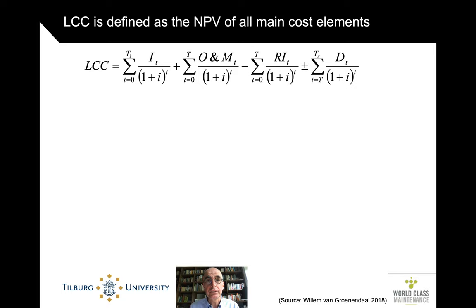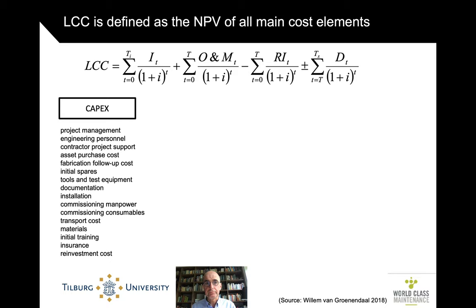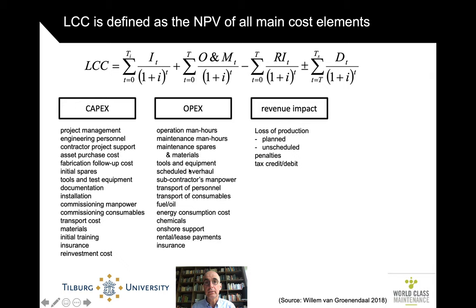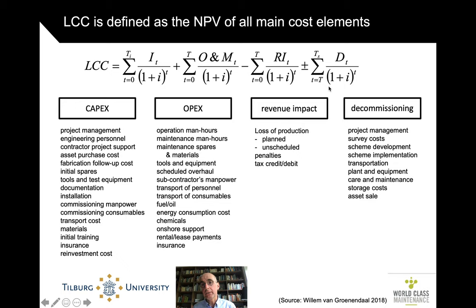If we then look at life cycle costing, that is the net present value of all the main cost elements. There are the capital expenditures: the initial investments in the project, the engineering, the contractor, all the purchasing costs, the installation, the transportation, the initial training. Then there is the OPEX: operation, man-hours, maintenance, spare parts, scheduled and subcontractor costs — all the recurring costs over the life cycle. You also factor in cost and revenue impact: what happens with loss of revenue due to planned or unscheduled downtime, some penalties, and depending on whether the value at the end of the lifetime is positive or negative, the decommissioning costs or benefits. And as you see, all of that is discounted over time.